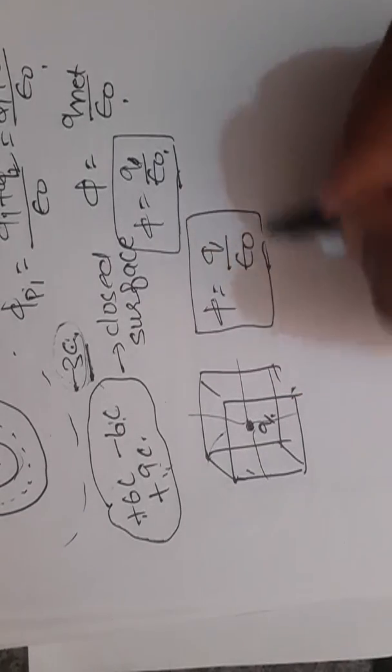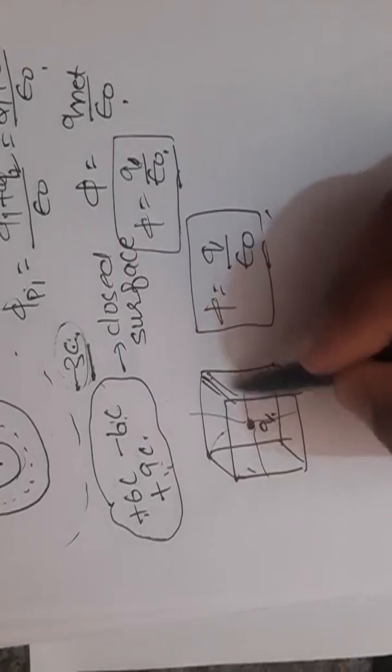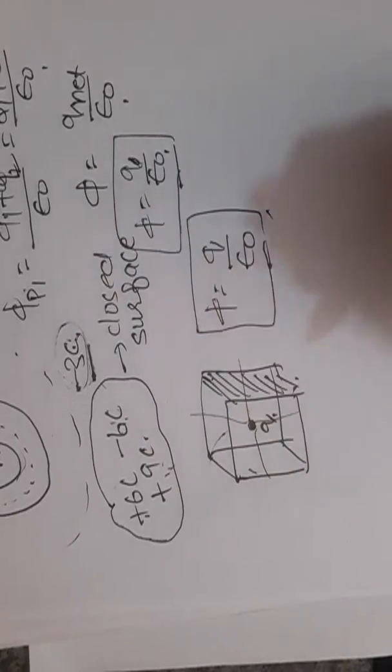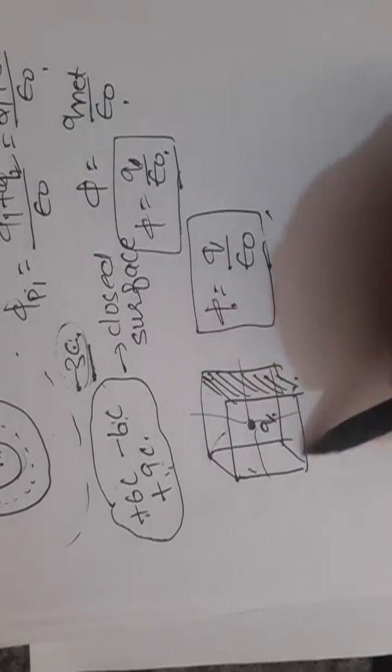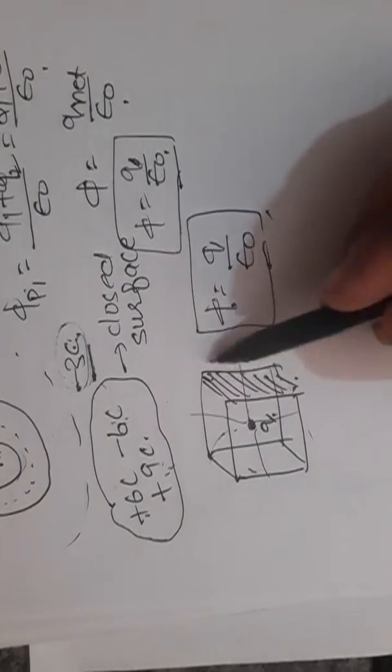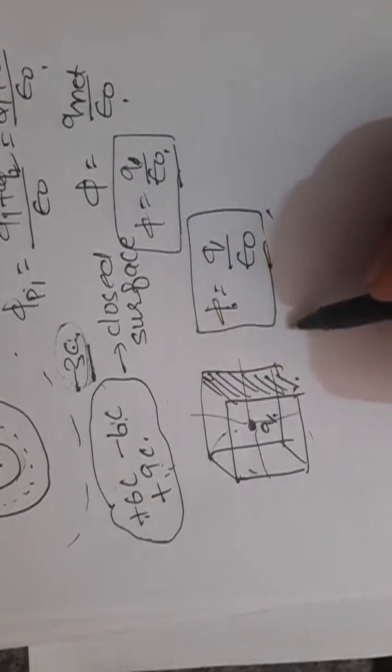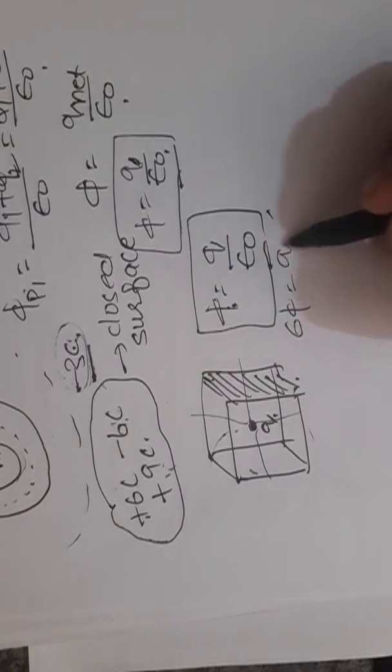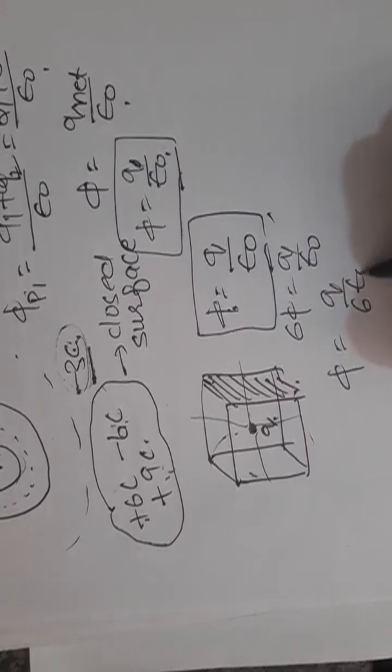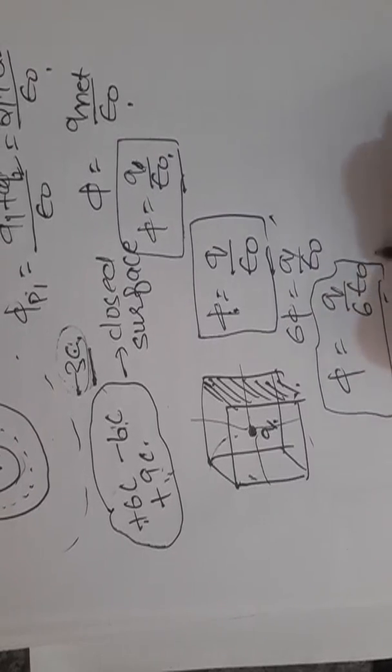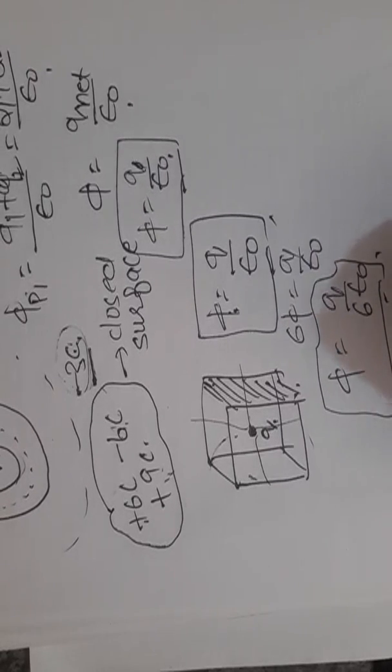The electric flux will come on this whole cube. This is the electric flux given by six surfaces. So what will be for single surface? Q by 6 epsilon_0.